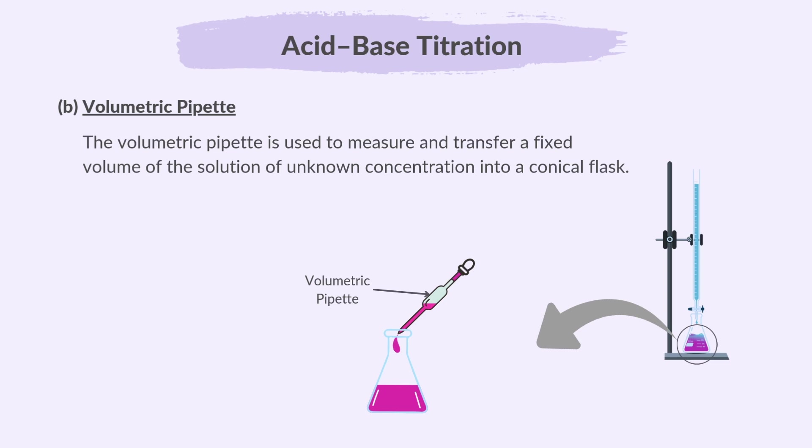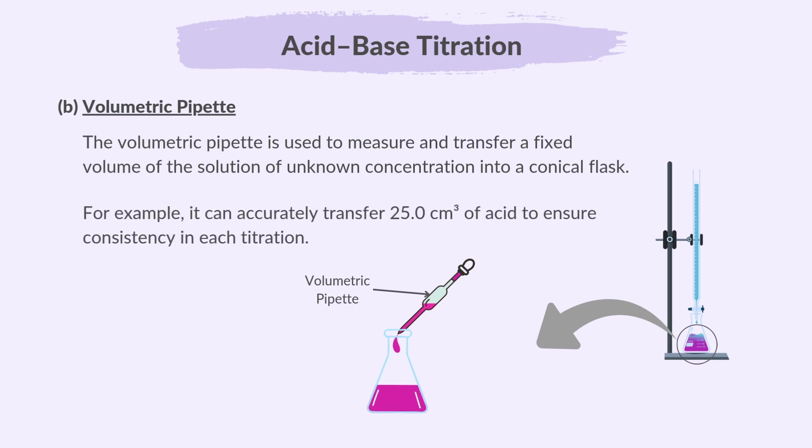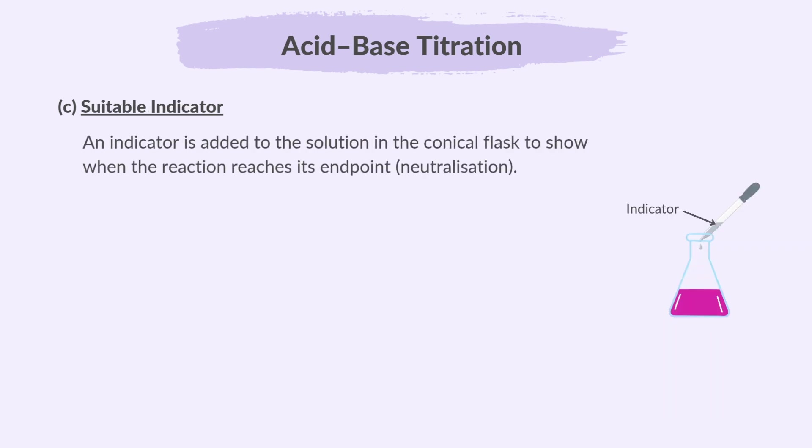For example, it can accurately transfer 25 cm³ of acid to ensure consistency in each titration. An indicator is added to the solution in the conical flask to show when the reaction reaches its end point, i.e. neutralization.